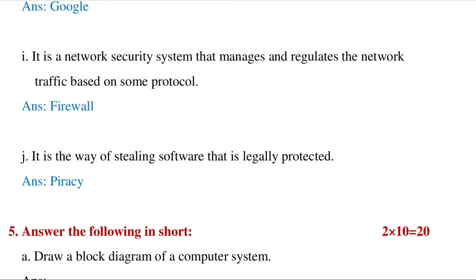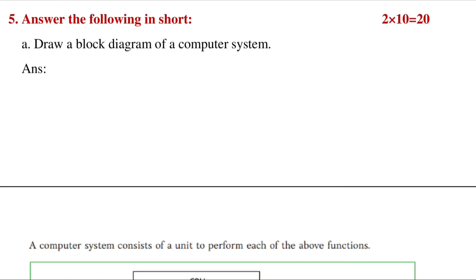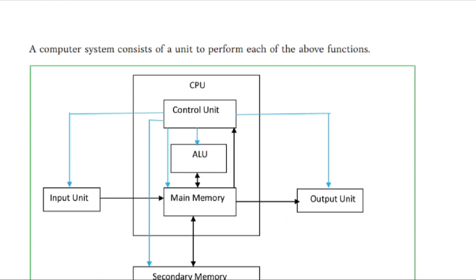It is a network security system that manages and regulates the network traffic based on some protocols. It's Firewall. It is a way of selling software that is legally protected. It's Piracy. Draw the block diagram of a computer system - it's already in your book, you can draw this diagram.